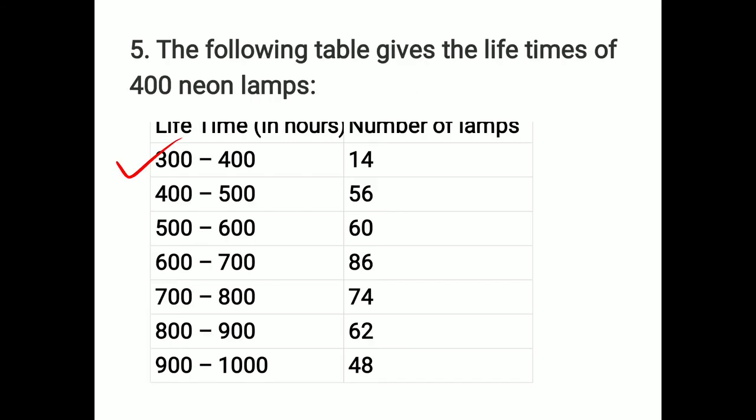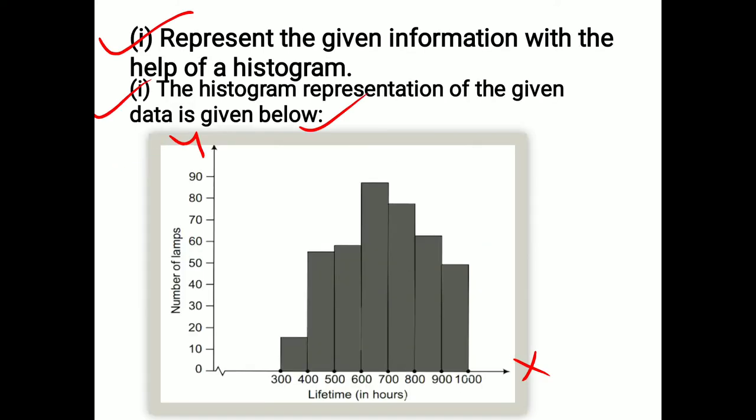Let's see. The smallest value is 14, the biggest value is 86. We make all the difference here. Look, it will always be 0, 10, 20, 30, 40, 50, 60, 70, 80, 90. So take it to 100.